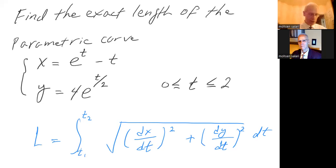Let's go to the next page and note that this minus t is not part of the power, it's e to the t all that minus t. And y is four times e to the power of one half t or t over two.